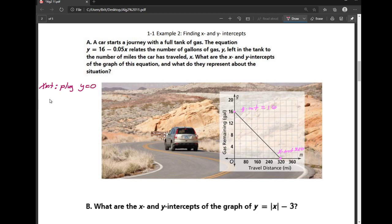So on my equation, where y is, I'm going to put a zero. So I have zero equals 16 minus 0.05x. I'm going to go ahead and add that 0.05x to the other side. So I have 0.05x is equal to 16.